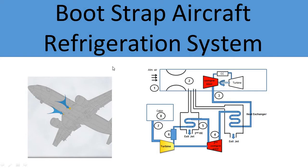The bootstrap cycle is a modification of the simple aircraft refrigeration system, so I suggest you first watch the video of the simple aircraft refrigeration system — the link is in the description and suggested in the top right corner. This modification consists of two compressors, two heat exchangers, and one turbine, whereas the simple system has one compressor, one heat exchanger, and one turbine before air is supplied into the cabin.